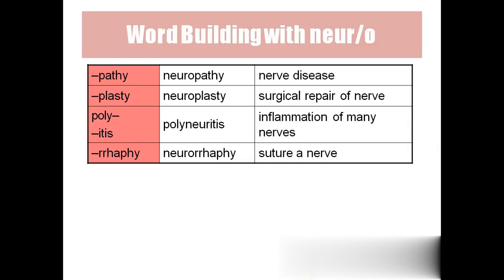'Neuropathy' — 'pathy' means disease, so neuropathy means nerve disease. 'Neuroplasty' — 'plasty' means surgical repair, so neuroplasty is surgical repair of the nerve. 'Polyneuritis' — neuritis means inflammation of the nerves, and polyneuritis means inflammation of many nerves. 'Neurorrhaphy' — '-orrhaphy' means suturing, so neurorrhaphy means suturing of the nerves.